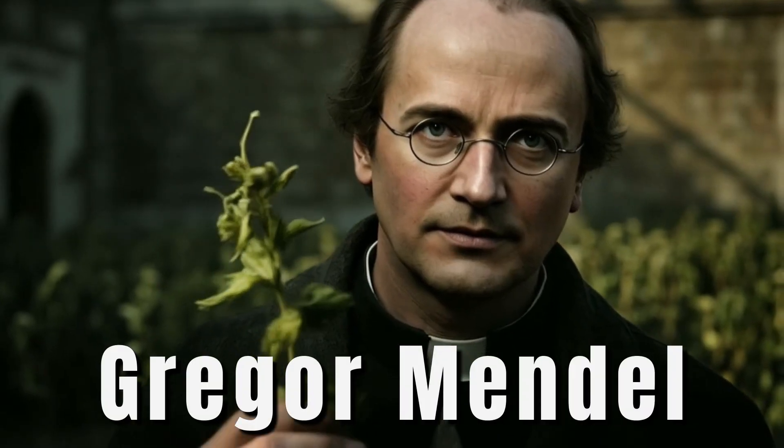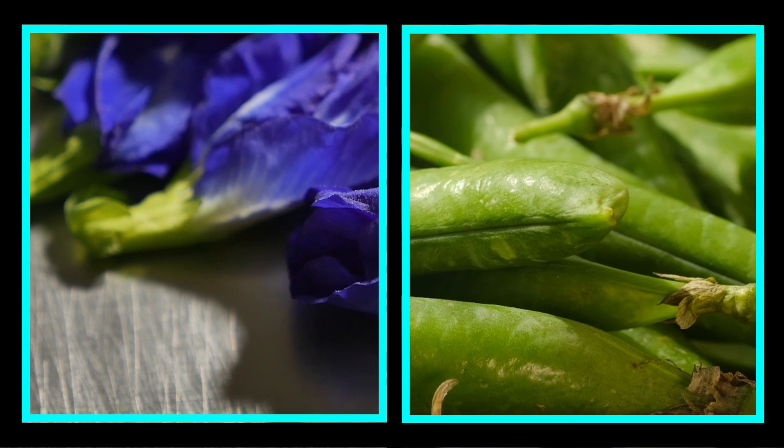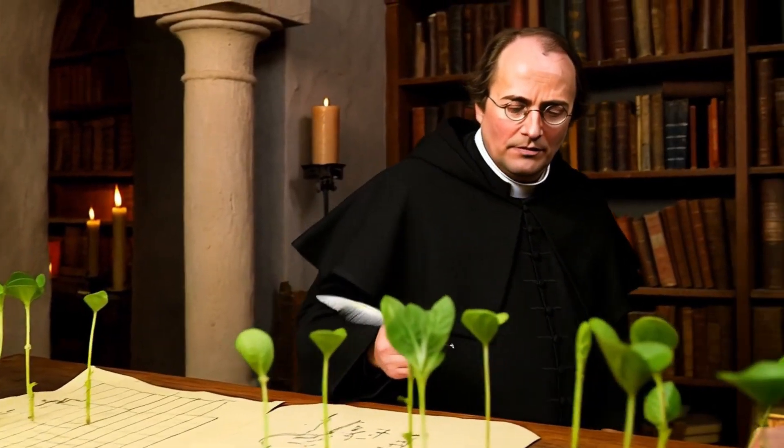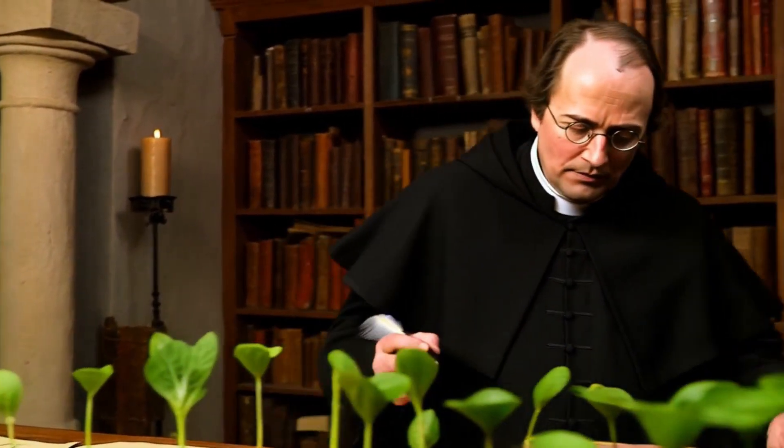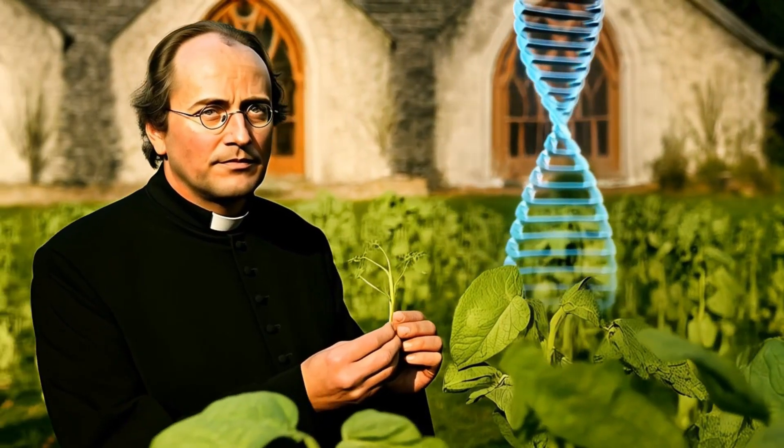In the 1800s, a monk named Gregor Mendel began crossing pea plants. He noticed that traits like flower color and seed shape followed patterns. He recorded everything carefully, using mathematics to explain inheritance. His work planted the first seeds of modern genetics, though the world ignored him at the time.